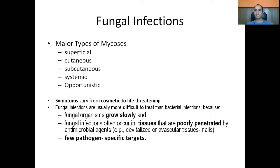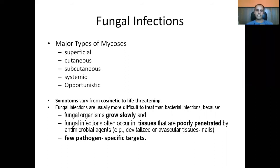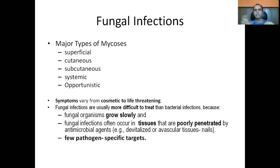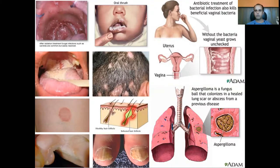Fungal infections are more difficult to treat than bacterial infections because fungal organisms grow very slowly. Fungal infections occur in tissues that are poorly penetrated by drugs, such as devitalized tissues, hair with tinea capitis, and nails with onychomycosis. There are very few pathogen-specific targets because fungal cells are metabolically similar to mammalian cells, making treatment relatively difficult.